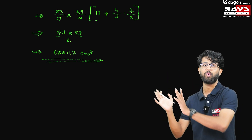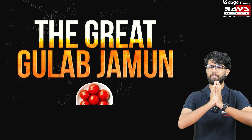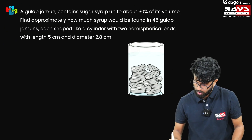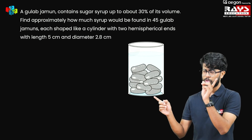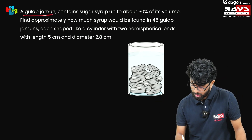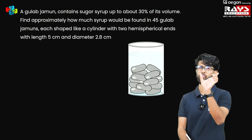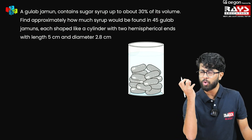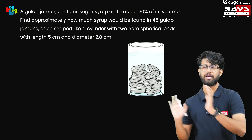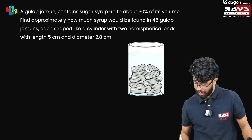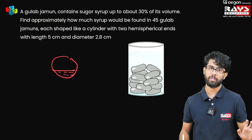The similar type is the Gulab Jamun problem. Now we are getting into the great Gulab Jamun problem — let me show you how easily we can solve it. Let's read the question carefully because many students don't read it properly. A Gulab Jamun contains sugar syrup up to about 30% of its volume. That means in a particular Gulab Jamun, 30% of the volume is already sugar syrup.